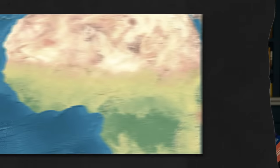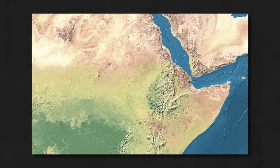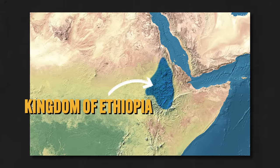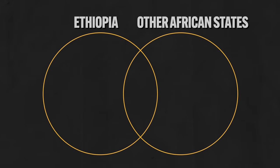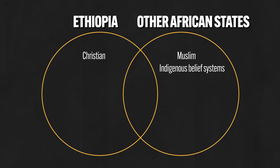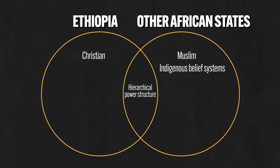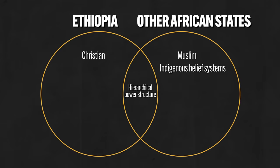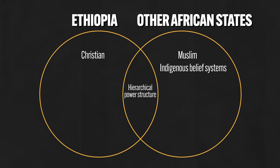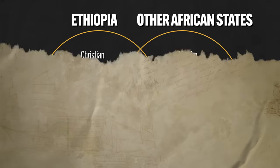Finally, let's meet the Kingdom of Ethiopia. This state grew and flourished because of trade, especially with other states around the Mediterranean and the Arabian peninsula. One massive feature that sets Ethiopia apart from many other African states is their religion — namely Christianity. It was the one Christian state in a sea of African states dominated by Islam and indigenous belief systems. Even so, their power structure was pretty hierarchical, with a monarch holding the top spot and various class structures below — and in that way, despite being a Christian state, Ethiopia resembled hierarchical states across Africa.